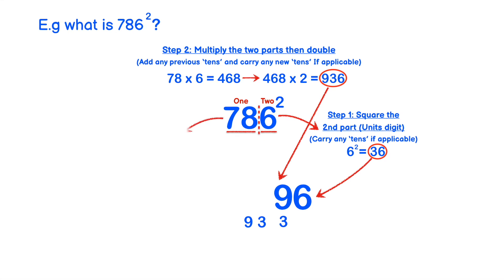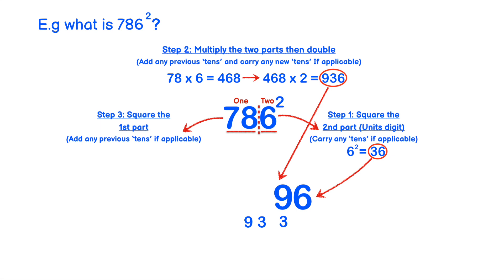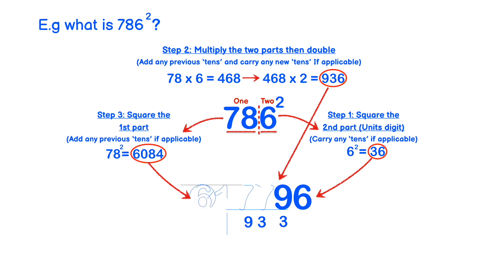In step 3, we square the first part and add any previous tens if applicable. In this case we need to add 93. Using the same technique as in how to square any two-digit number, 78 squared equals 6084. Adding 93 to that gives us 6177. So the final answer is 617796.